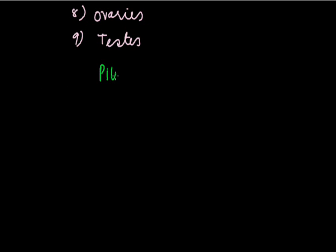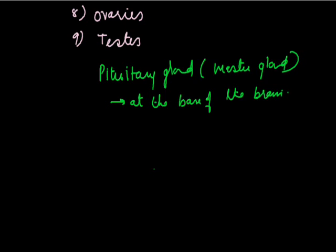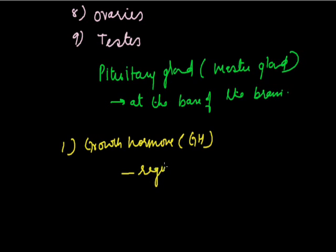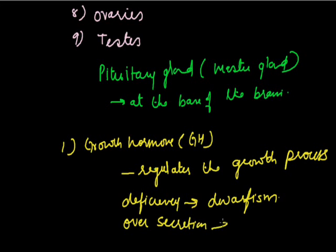First we take the pituitary gland, also called the master gland. It is a small ovoid structure attached at the base of the brain. It controls other endocrine glands. The first hormone of the pituitary is growth hormone, also called GH. This hormone promotes and regulates the process of growth in our body. Its deficiency during childhood leads to dwarfism, and its over-secretion leads to gigantism.